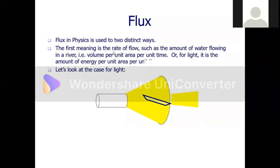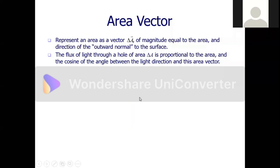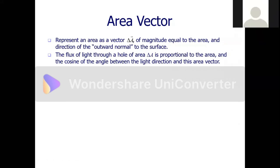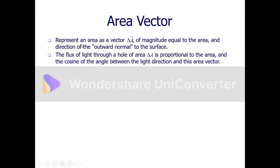From this experiment, we see that the flux depends on the area. Now I want to introduce what is called the area vector. The area vector is a vector that has a magnitude and direction associated with a given area.